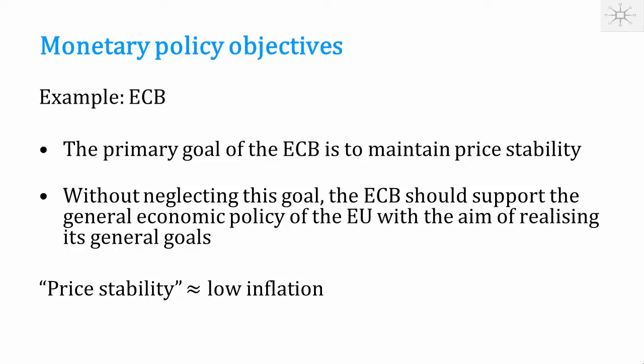When we say price stability, we typically do not mean that prices should be absolutely constant. Rather, we mean that we should have a low and reasonably stable rate of inflation. So price stability or low inflation is the main objective. The central bank can try to achieve other things, such as high and stable production and high and stable employment, but only if it's not in conflict with price stability — in this sense, price stability is the primary goal.